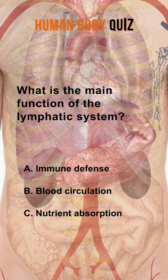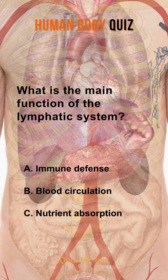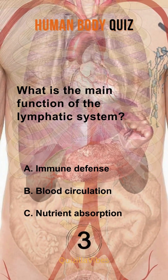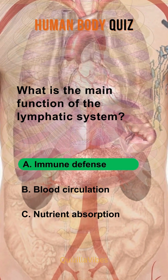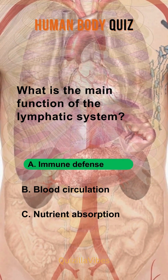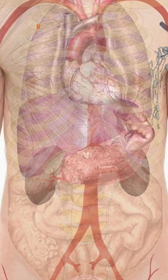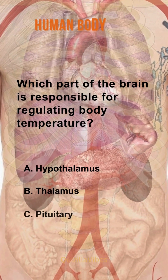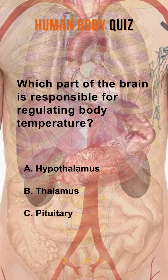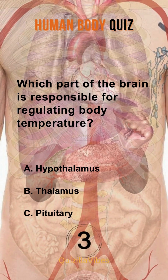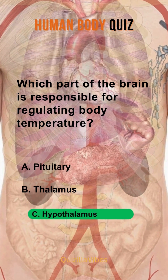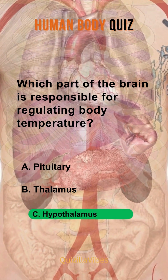What is the main function of the lymphatic system? Immune defense. Which part of the brain is responsible for regulating body temperature? Hypothalamus.